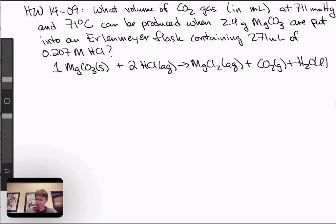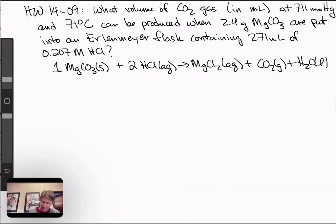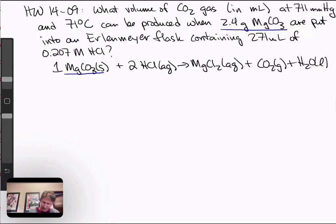A couple things we notice about this problem right away: we have grams of magnesium carbonate, and magnesium carbonate is one of our reactants. We have milliliters and molarity of our other reactant, and whenever you have enough information to find moles about two reactants, that's a limiting reactant problem.